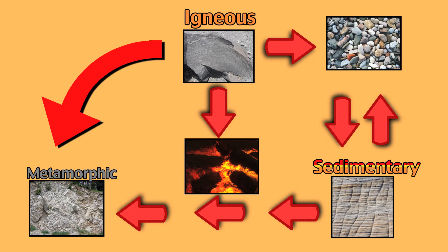Metamorphic rocks are formed far beneath the surface under extreme heat and pressure. From here, metamorphic rock can either be weathered down into sediment again, or it can melt into magma and the cycle starts all over again.